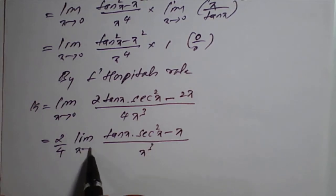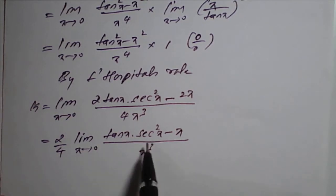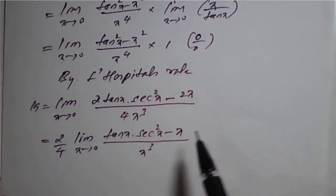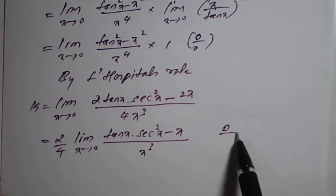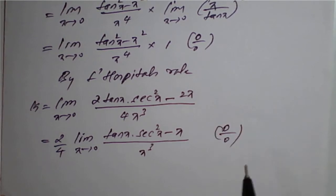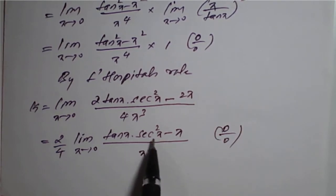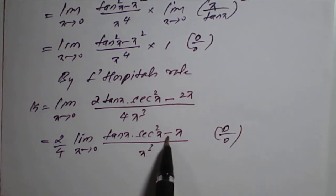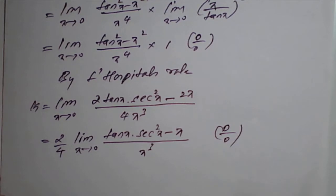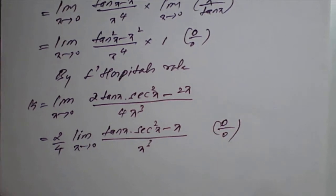As x tends to 0, checking the form: tan of 0 is 0, so 0 into secant square minus 0 divided by 0 is again 0 by 0 form. So we take 2 common from the numerator and the expression becomes (1/2) times limit x tends to 0 of (tan x secant square x minus x) over x cube.